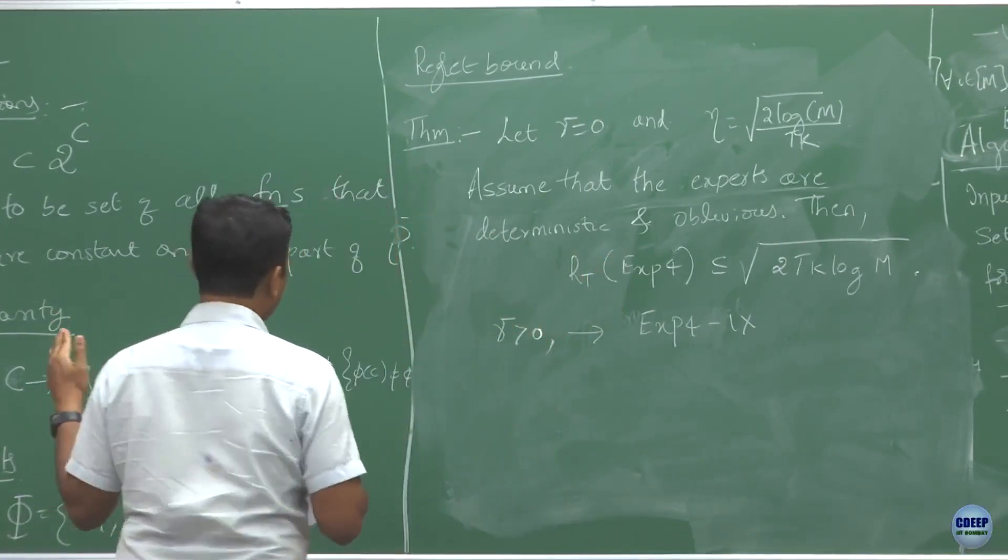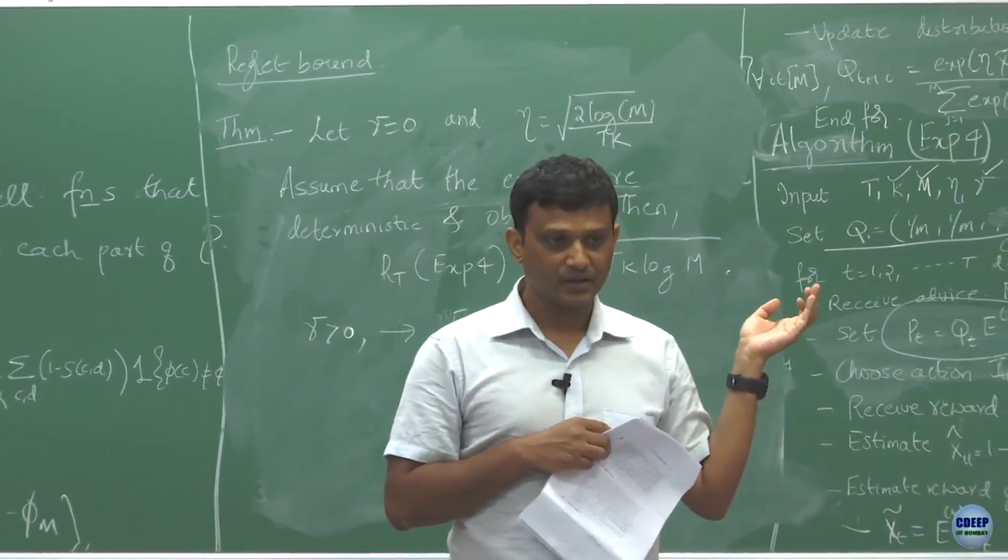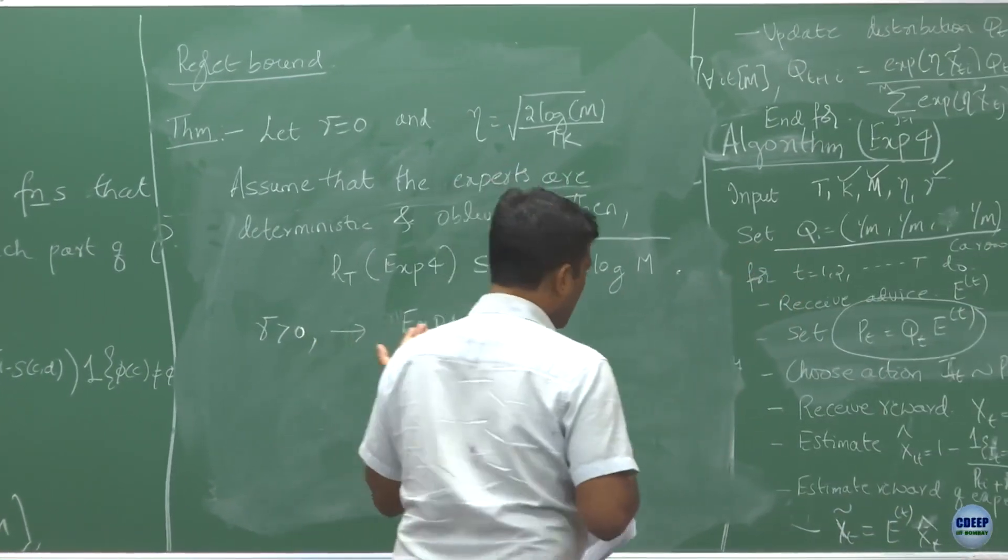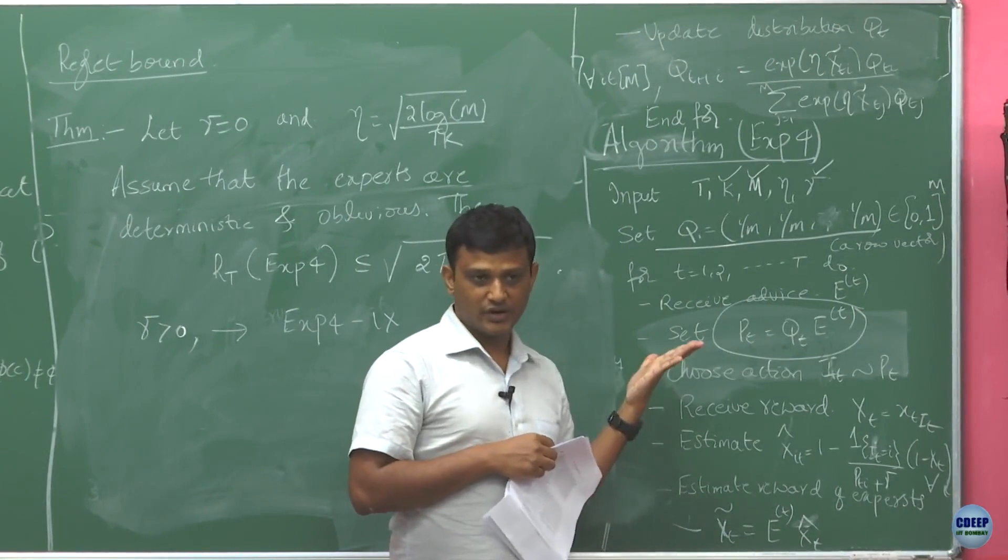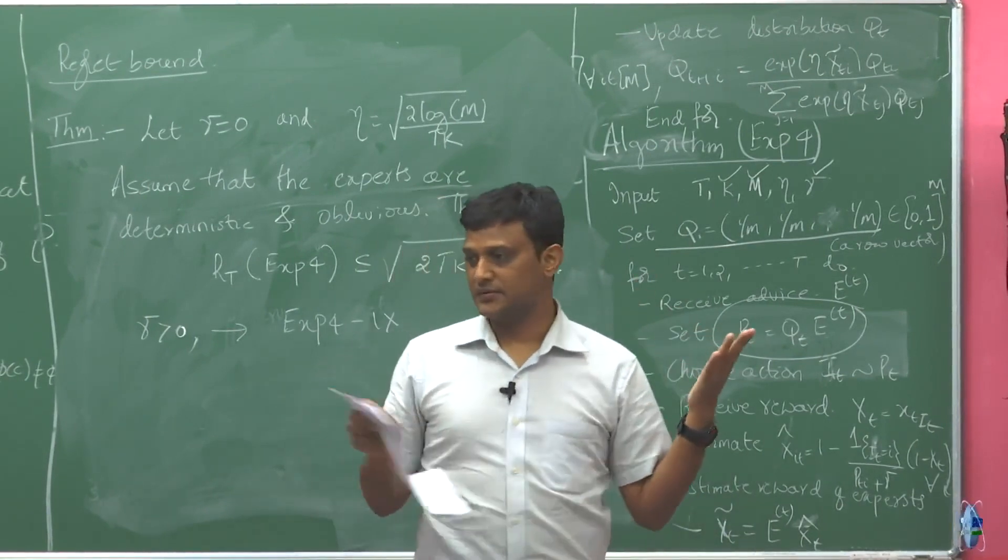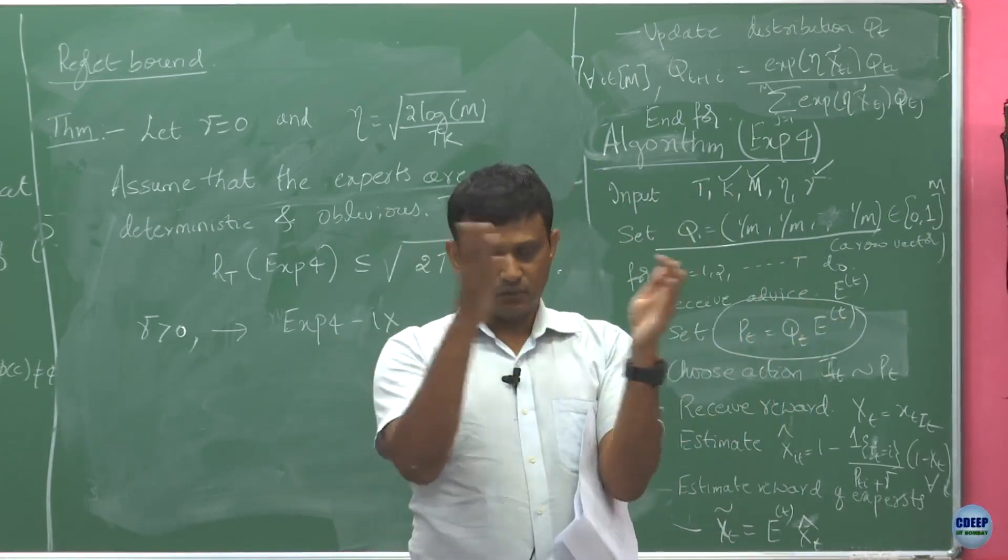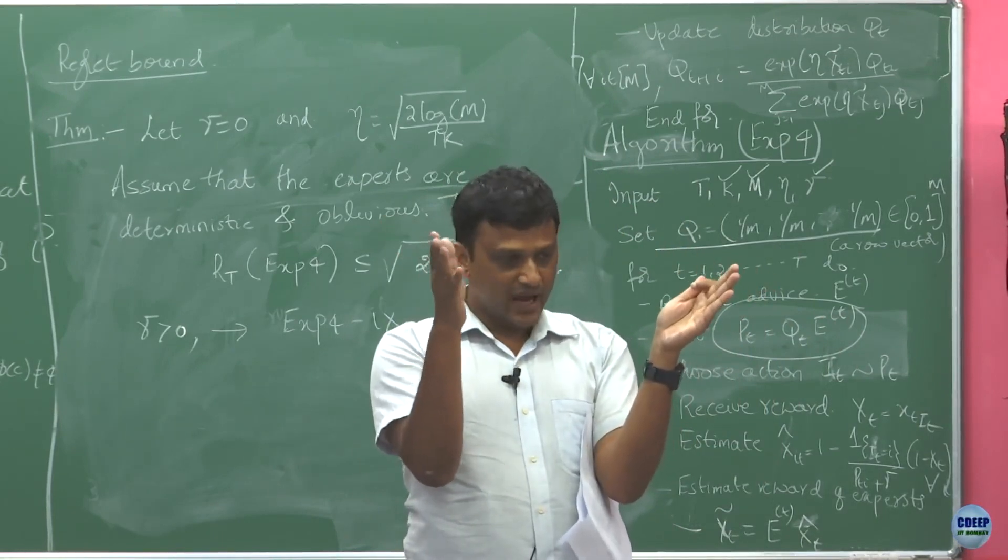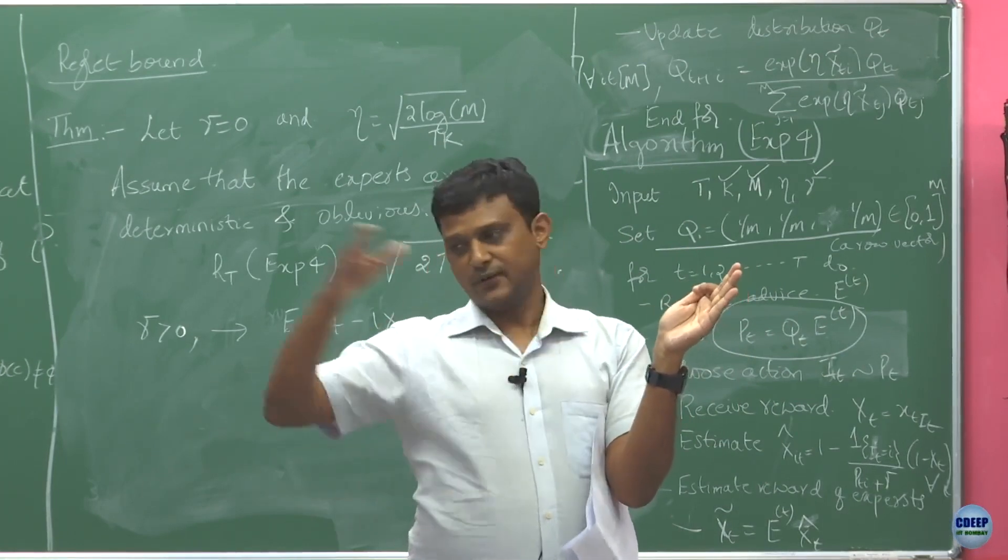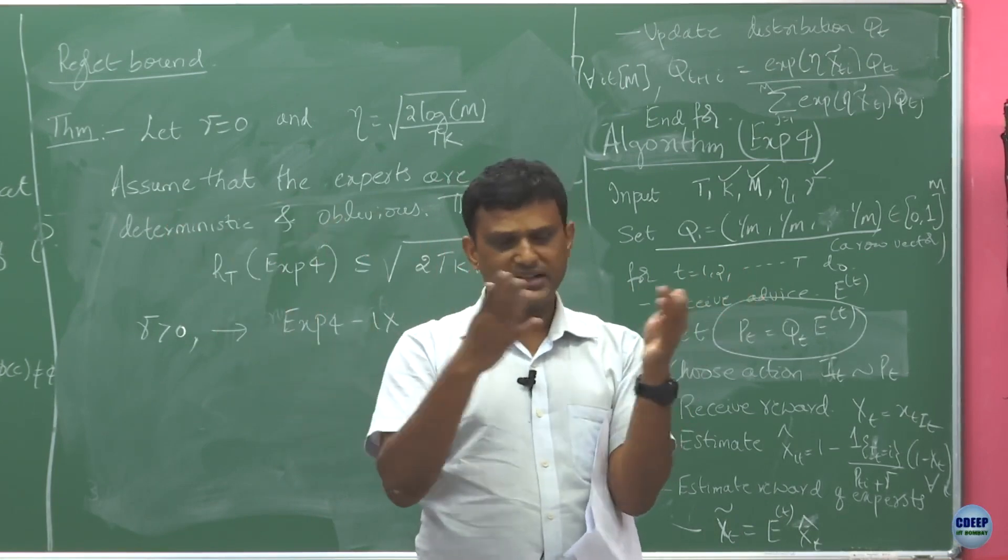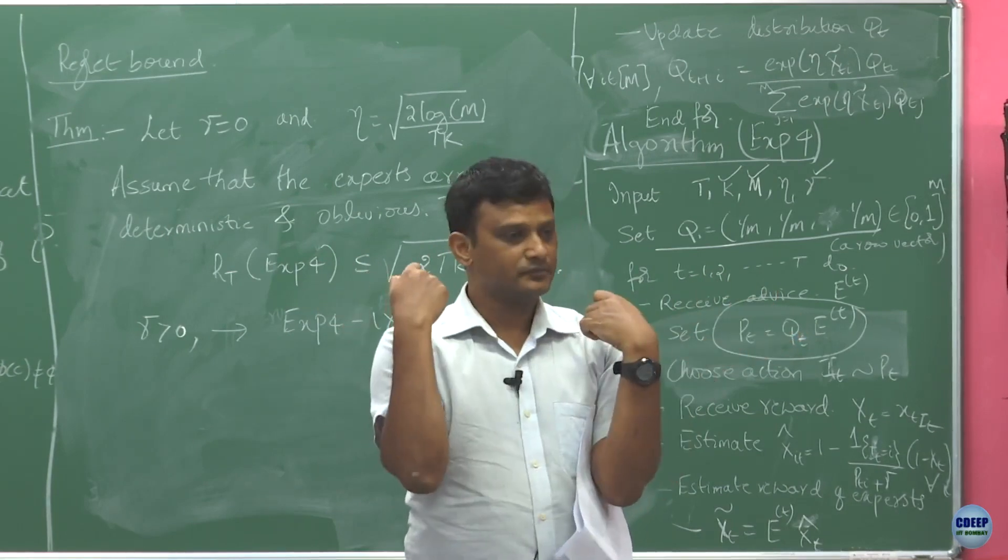And we are also assuming that these experts are oblivious. What does that mean? Whatever rewards they are going to get, they are not going to change their distribution accordingly. So you can assume that each expert has already come up with what distribution he is going to put on the arms for each context, and he is not going to change based on what reward he has been observing so far. What context he observes is irrelevant to him.